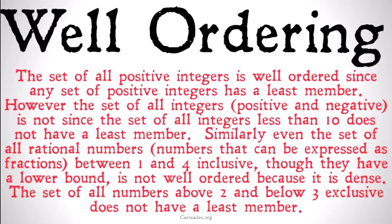Similarly, even the set of all rational numbers between 1 and 4 inclusive, though they have a lower bound, is not well-ordered because it is dense. That's pretty confusing, so let's slow down and look at that carefully.